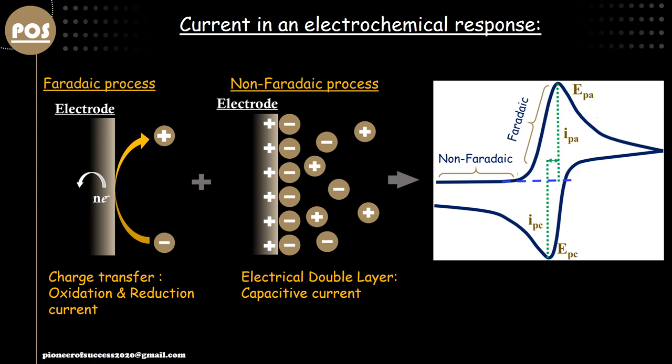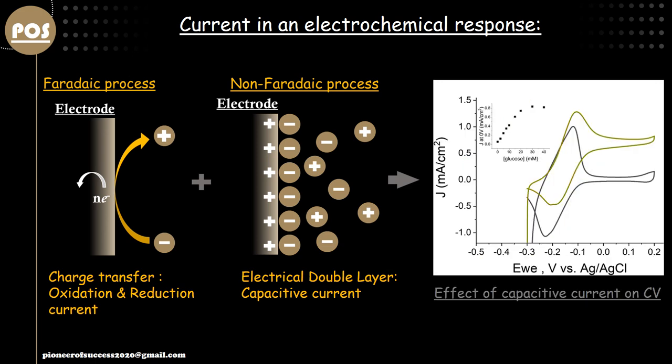That is why we should have some procedure by which we can actually segregate these two components of the current — remove the non-faradaic component and get information about only the faradaic component. DPV is a procedure by which we can negate this non-faradaic component of current. It is not that we can totally neglect it, but in DPV we try to remove this background charging current as much as possible.